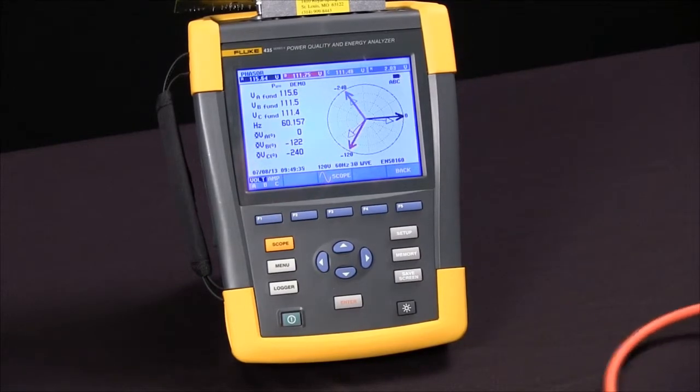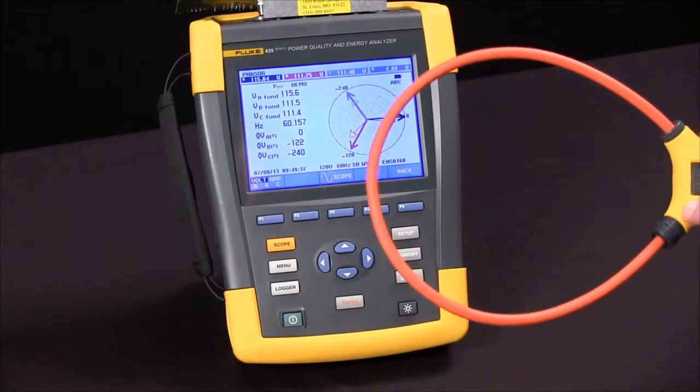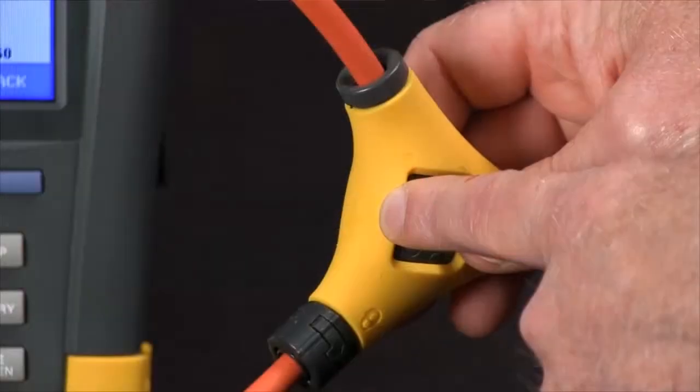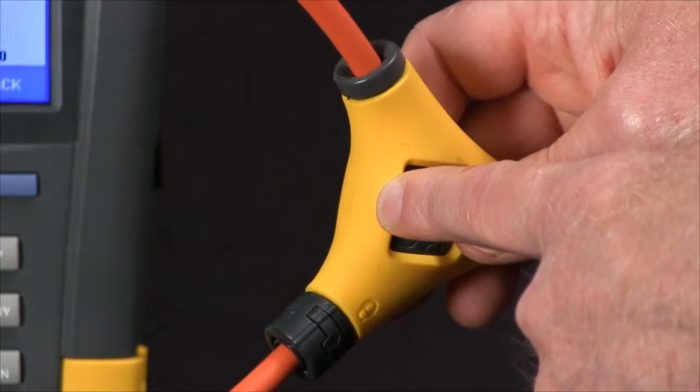The way to see when you have to make a correction for the current clamp is to look for an arrow on the inside of the CT that should be pointed towards the load.